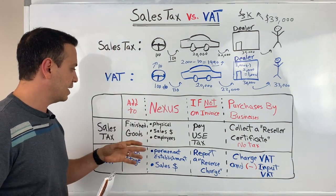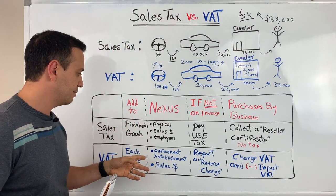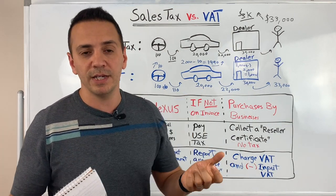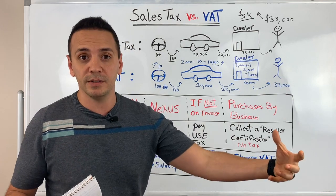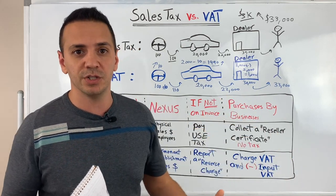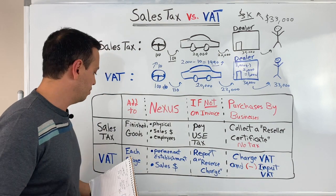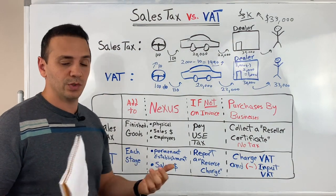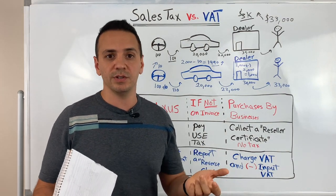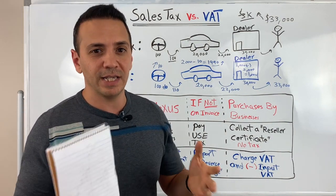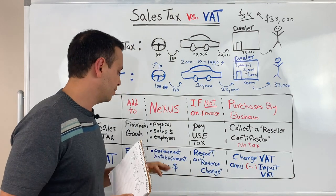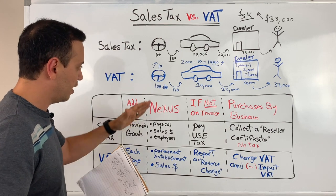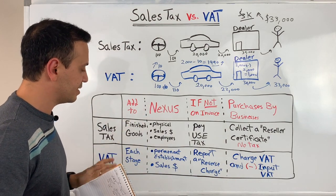Nexus for VAT is established with a very similar concept: permanent establishment. Permanent establishment is based on whether you have a physical location or if you're incorporated through one of your subsidiaries in a jurisdiction — that will also create nexus for VAT, as well as the sales threshold. In the UK, for example, the threshold in 2020 is about 86,000 pounds.